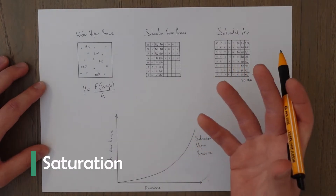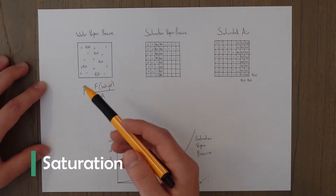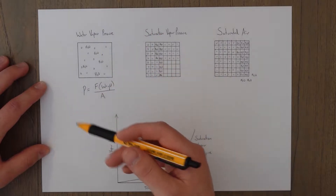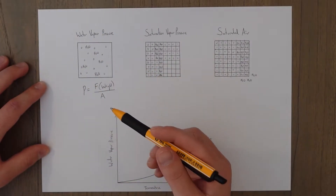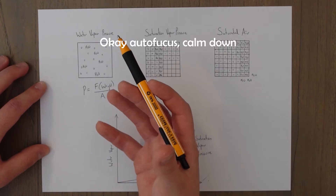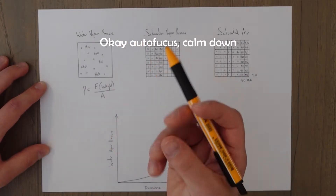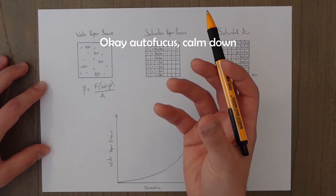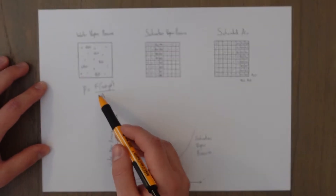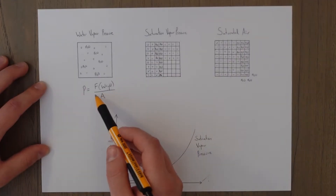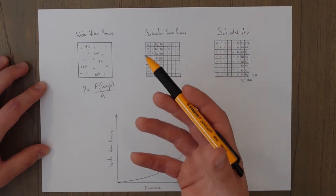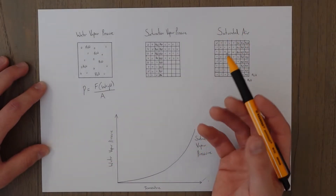The water vapor in the air has a certain pressure to it which it exerts onto the air molecules and the air around it. Pressure can be a confusing term because it's more like the amount of water vapor that is in the air, but because it has a weight which is a force and it's exerting that over certain areas, you can think of it as a pressure because pressure is force over area.